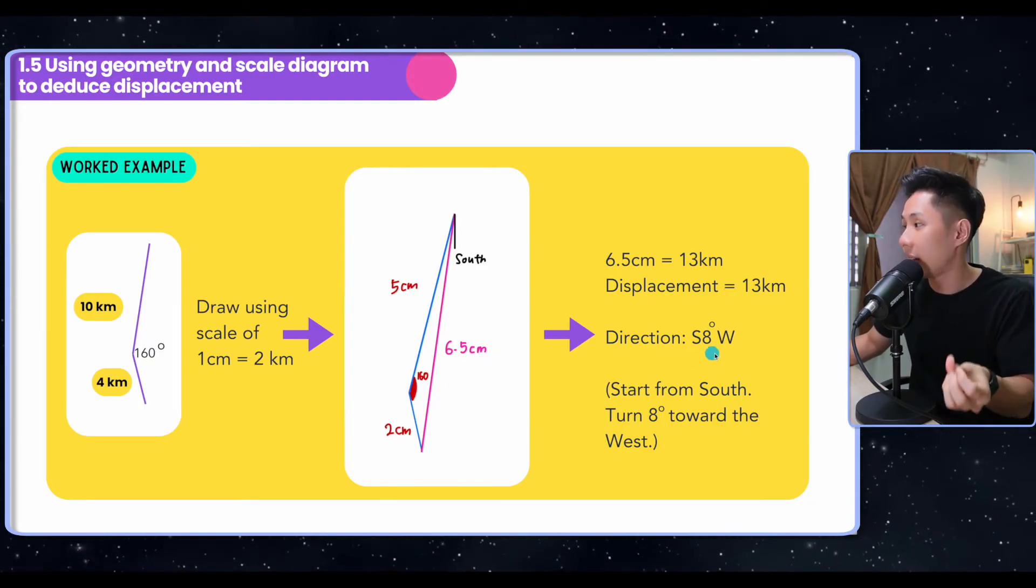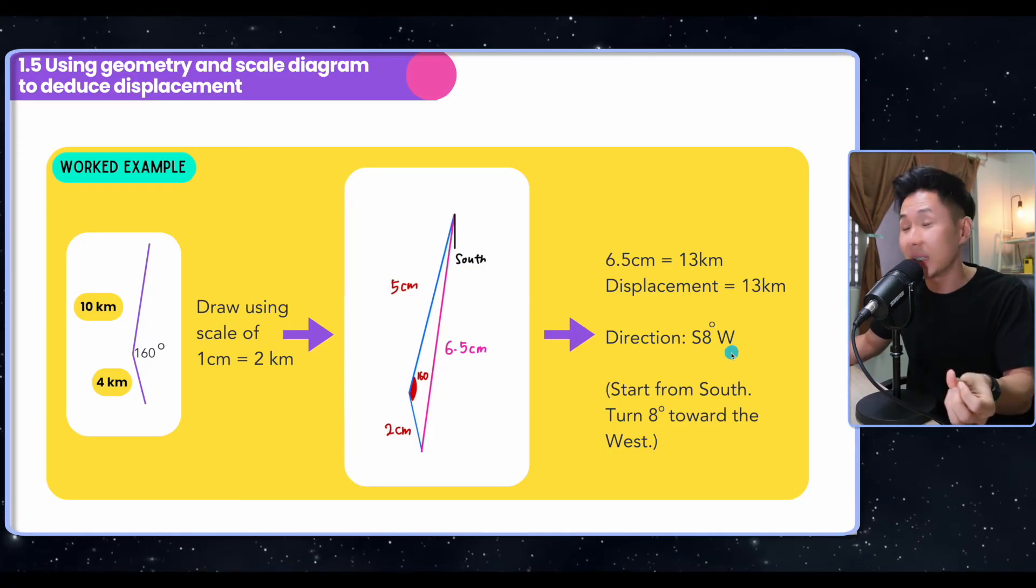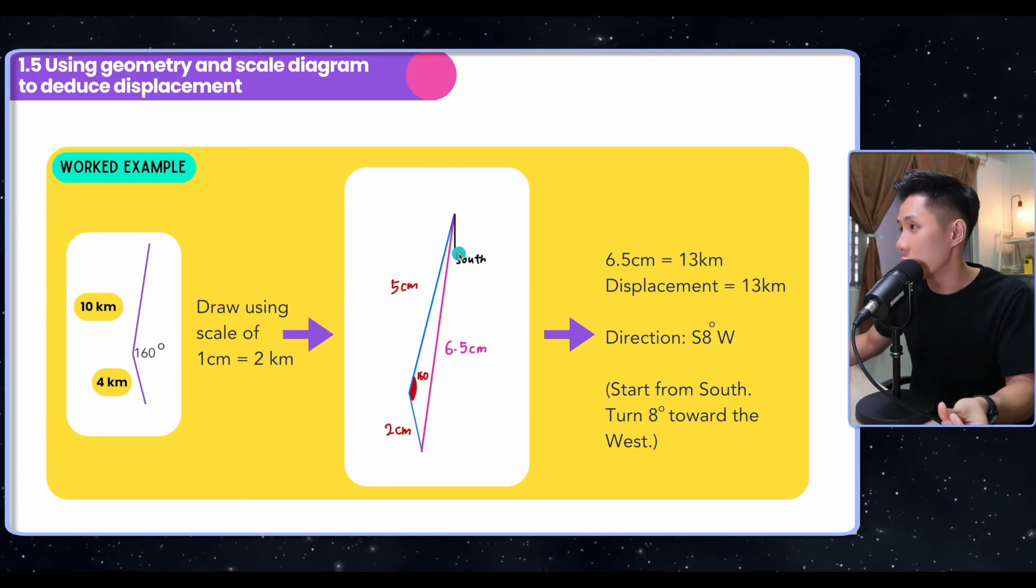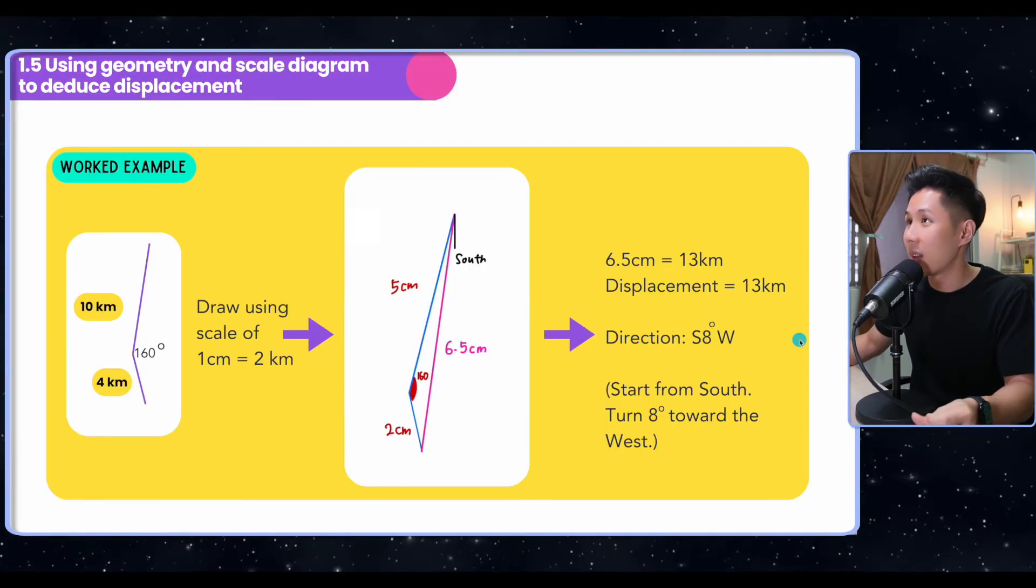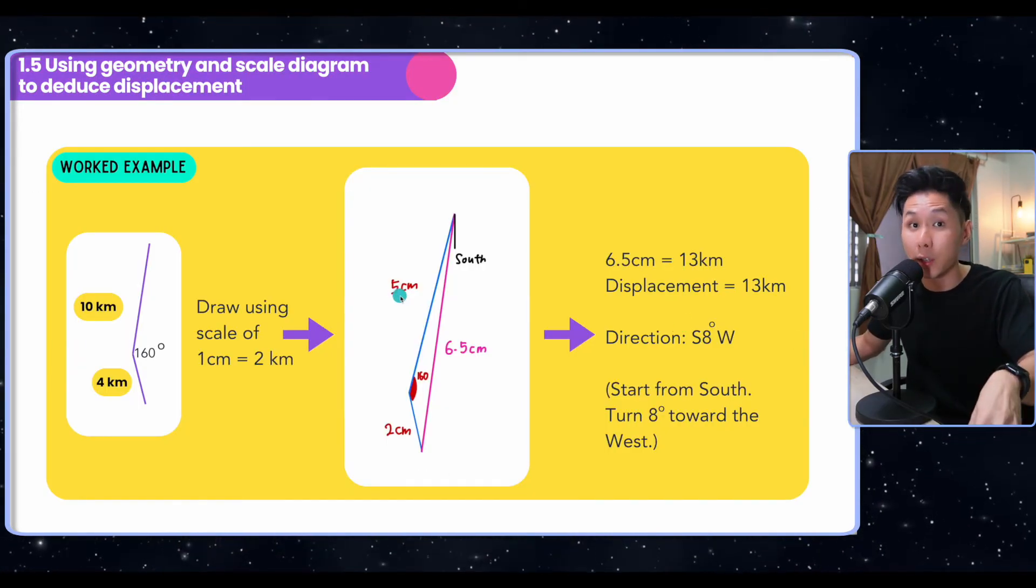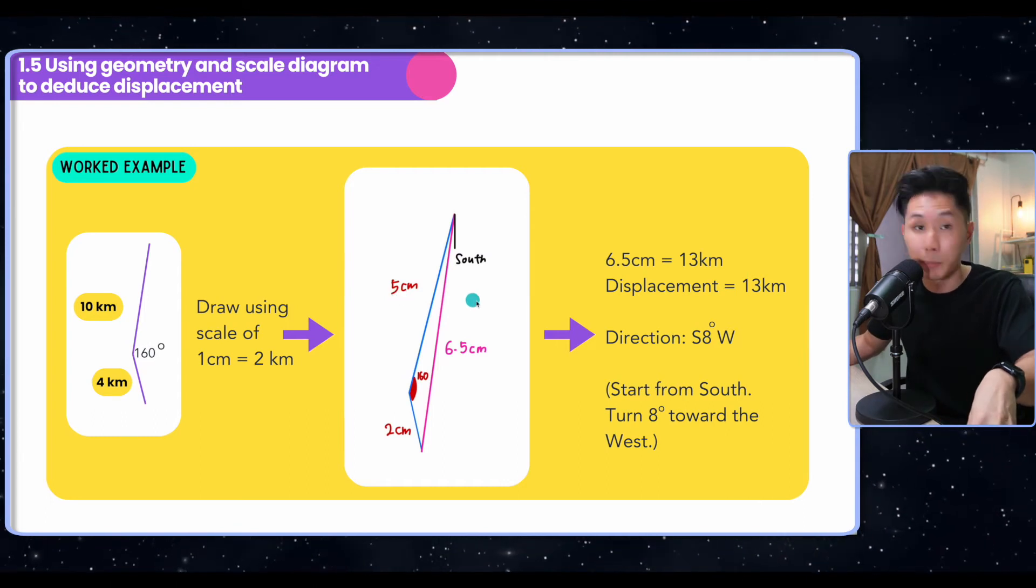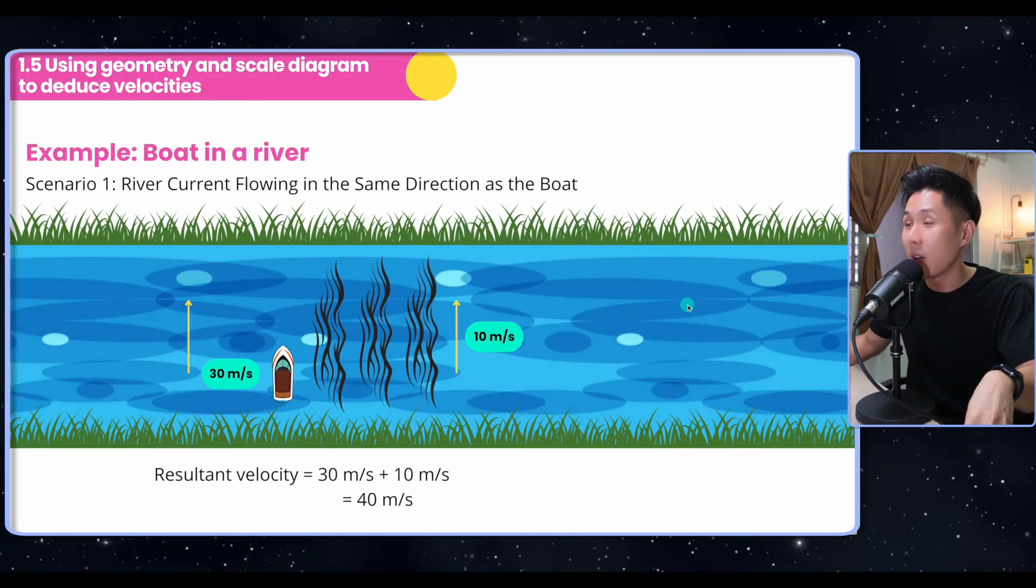Do note that in this case, because we are calculating the displacement, you do need to provide a direction. You can see that the pink colored line here, we say that its direction is south 8 west. What it means is we'll move 8 degrees from south towards the west. This is what the direction symbol means here.